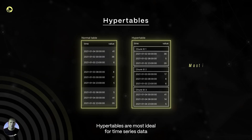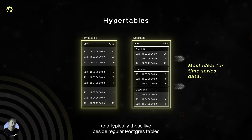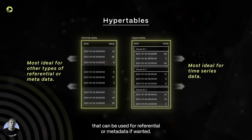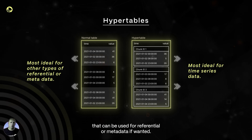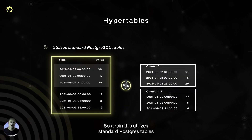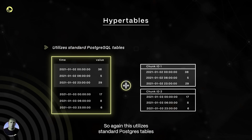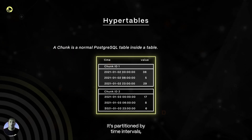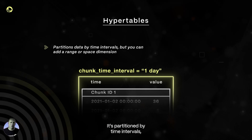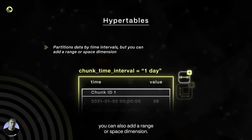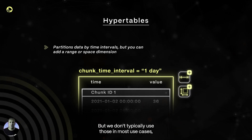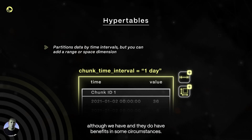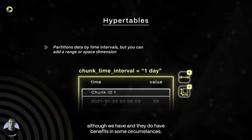Hyper tables are most ideal for time series data, and typically those live beside regular Postgres tables that can be used for referential or metadata if wanted. This utilizes standard Postgres tables and a chunk is just a regular Postgres table, partitioned by time intervals. You can also add a range or space dimension, but we don't typically use those in most use cases, although they do have benefits in some circumstances.